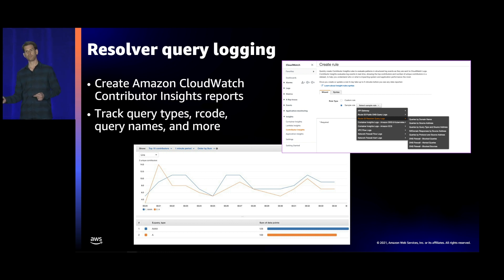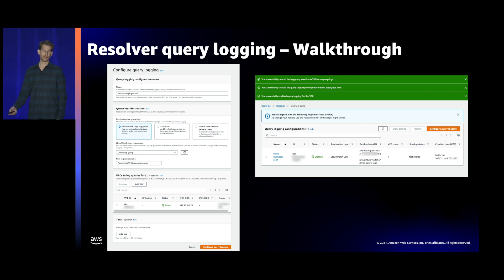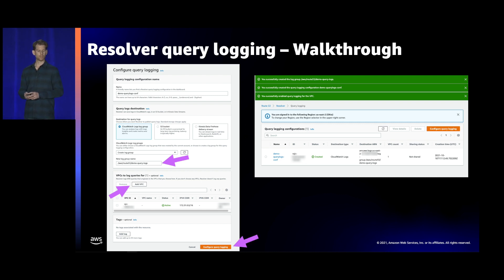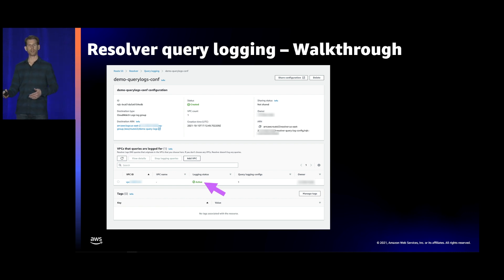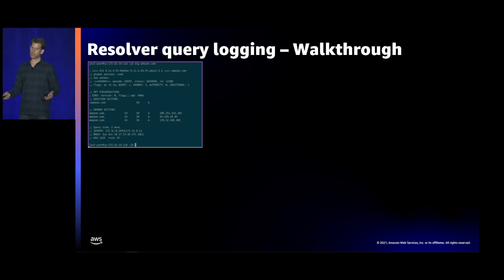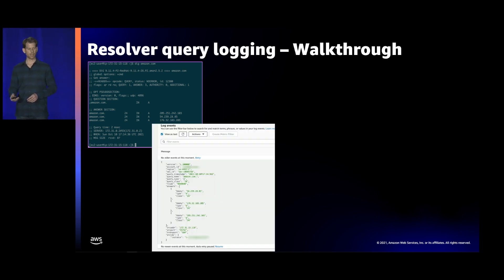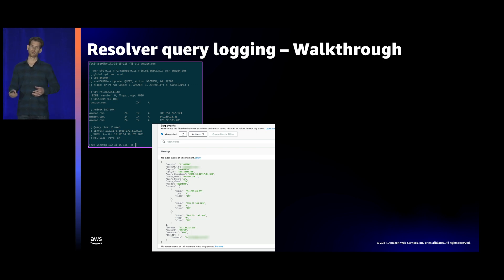Let's walk through setting up a query log. We're going to send it to CloudWatch, so we specify a CloudWatch log group and attach that to the VPC we want to collect logs for. Once we've created the resolver query log configuration and it's active on that VPC, the query logs start flowing into CloudWatch. On an instance within the VPC, if we query for amazon.com, we can see the returned IP addresses (A records). In CloudWatch we see the same — IP addresses, A records, result code, instance that queried it, account information, and other metadata.